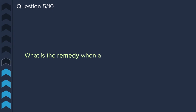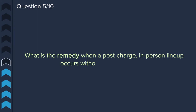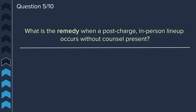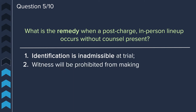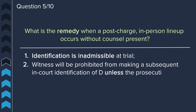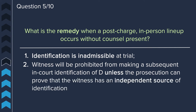Question five: what is the remedy when a post-charge in-person lineup occurs without counsel present? The identification will be inadmissible at trial, and the witness will be prohibited from making a subsequent in-court identification of the defendant, unless the prosecution can prove that the witness has an independent source of identification.